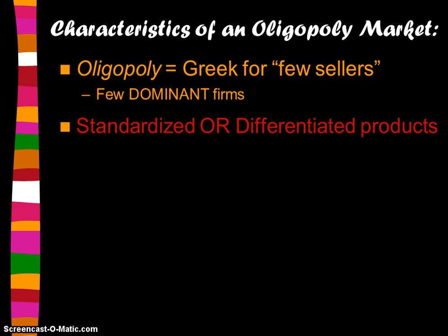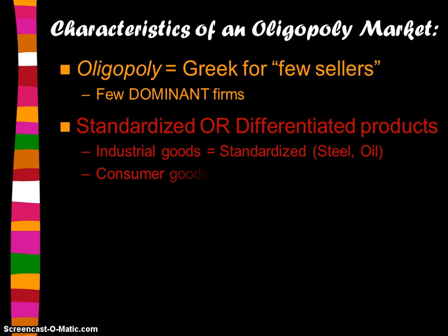The products are going to be standardized or differentiated. They are usually standardized for industrial goods such as steel, oil, and glass, and differentiated for the consumer goods we're more familiar with, like cars, cereal, and airlines.